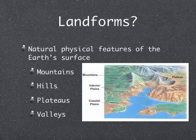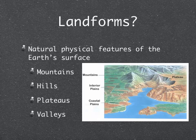So what exactly are landforms in the first place? Landforms are any natural physical feature of the Earth's surface. They can include mountains, hills, plateaus, and valleys.